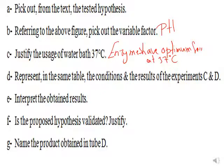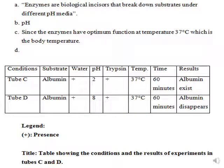After adding trypsin and water to tube D at pH 8 at temperature 37 degrees Celsius, the albumin disappeared after 60 minutes. This indicates that digestion occurred in tube D. The variable factor between these two tubes is the pH, so pH played an important role in the process of digestion. The hypothesis is validated — it is confirmed — because the variable between the two experiments is the pH, and digestion occurs in tube D where pH equals 8 (basic), while there is no digestion in tube C where pH equals 2 (acidic). The final product obtained in tube D is amino acids.